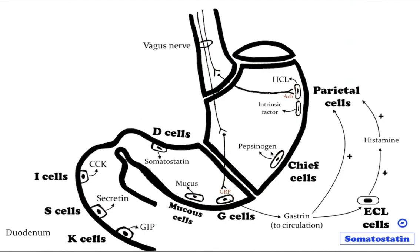Delta cells or D cells are somatostatin-producing cells. In the stomach, the D cells are in the antrum. Somatostatin has a general inhibitory effect on exocrine and endocrine cells.